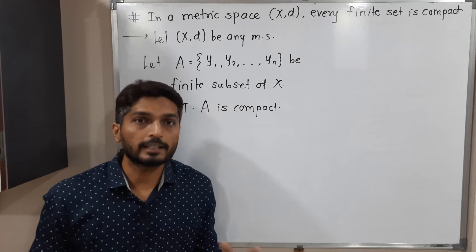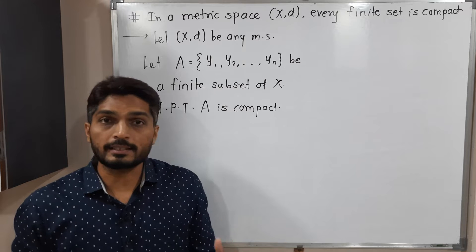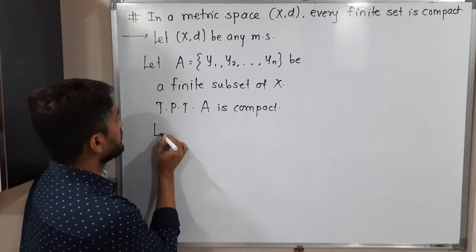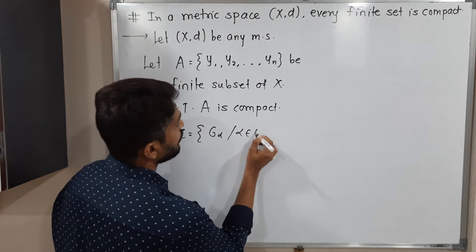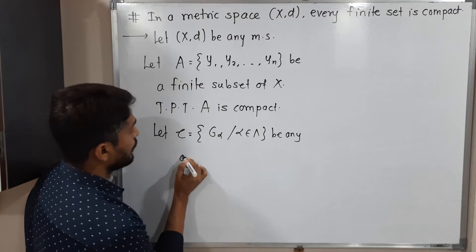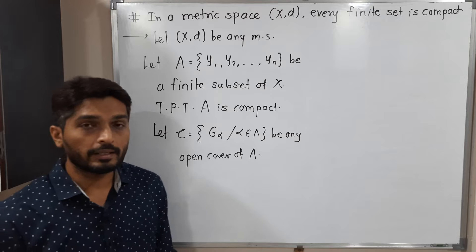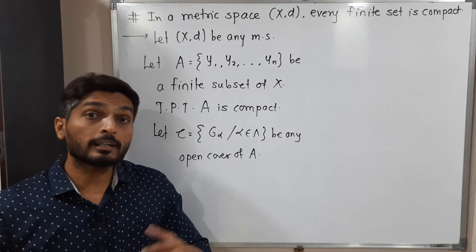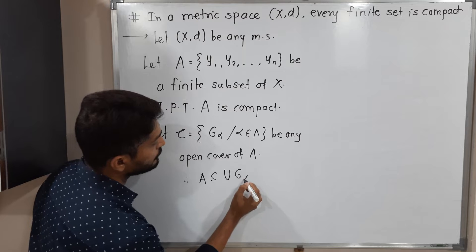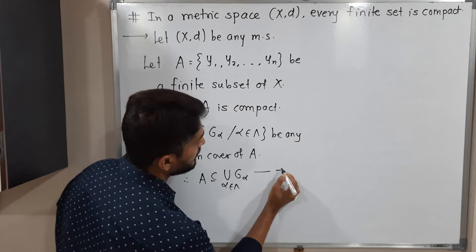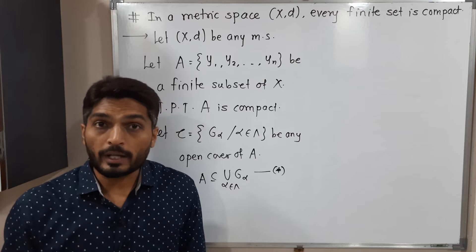Compact means every open cover has a finite subcover. So we have to prove every open cover of A has a finite subcover. Let script C = {G_alpha : alpha belongs to lambda} be any open cover of A. Open cover of A means each set is open and their union covers A, so A is a subset of the union of G_alpha over alpha in lambda. Let us denote this by star.